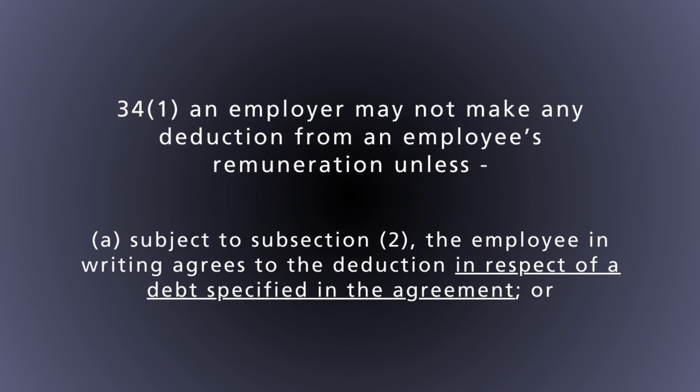The contract is a written agreement so it covers the requirement for deductions being in writing. This is very useful particularly for fixed deductions made on a monthly basis. However, the contract clause on deductions is not sufficient on its own, because Section 34(1)(a) specifically says 'in respect of a debt specified in the agreement,' and everything is also subject to subsection 2, which we'll discuss shortly.